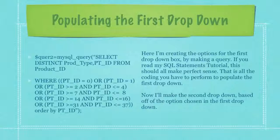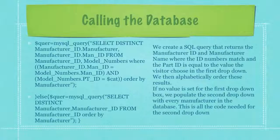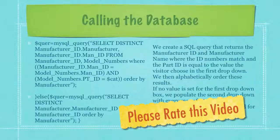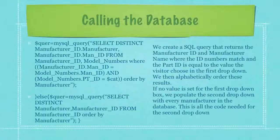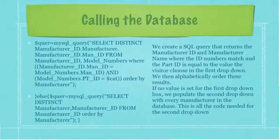Now I'll make the second drop-down based off the option chosen in the first drop-down. Here we're checking that a value has been set for the first drop-down box. We create an SQL query that returns a manufacturer ID and manufacturer name where the ID numbers match and the part ID is equal to the value the visitor chose in the first drop-down. We then alphabetically order these results. If no result is set for the first drop-down box we populate the second drop-down with every manufacturer in the database. This is all the code needed for the second drop-down box.